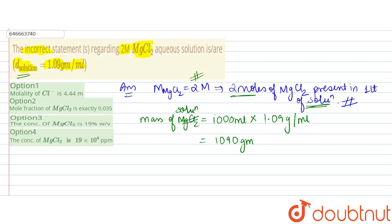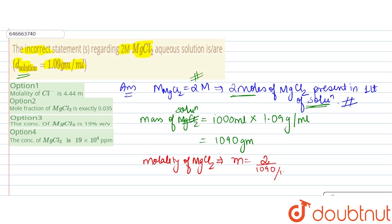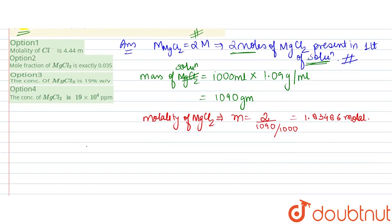Now we calculate molality. Molality (m) = number of moles divided by mass of solvent in kilograms. The mass of solution is 1090 g. We'll subtract the solute mass shortly. For now, note that molality of Cl atoms will be 2 times the molality of MgCl₂, since each MgCl₂ contains 2 Cl atoms.